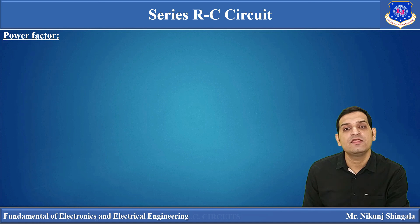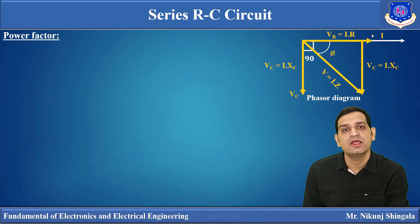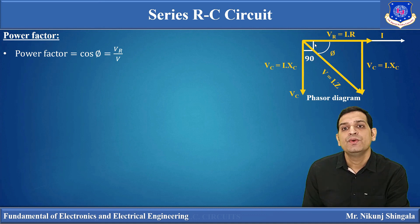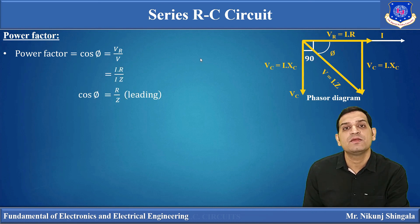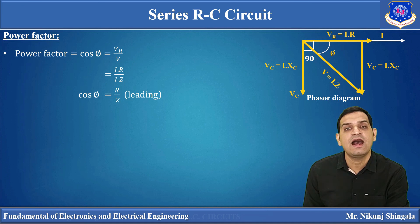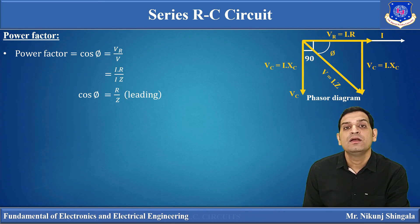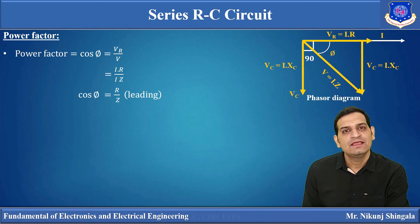Moving towards the power factor: the power factor is the cosine of the angle between the voltage and the resulting current. From the voltage triangle: cos φ = VR / V. Since VR = IR and V = IZ, the power factor for the series RC circuit is cos φ = R / Z (leading), because for a series RC circuit, current leads the voltage by angle φ. Here Z = √(R² + XC²).